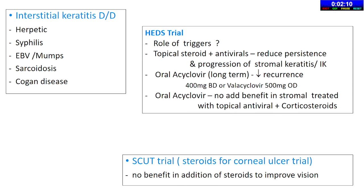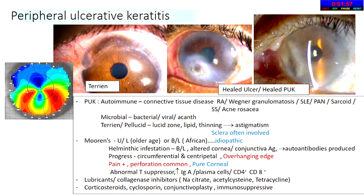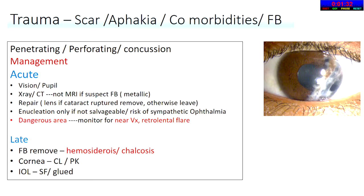For IK (interstitial keratitis), the viva will go on the HEDS trial, role of triggers, topical steroids, and oral acyclovir. Know the HEDS and CATS trials and the recent trials about corneal cases. For keratoconus, you most probably won't get an active case but you'll always get a topography map. Know the kissing crab appearance, beak appearance, or parrot's appearance — which are typical of keratoconus versus pellucid marginal degeneration.